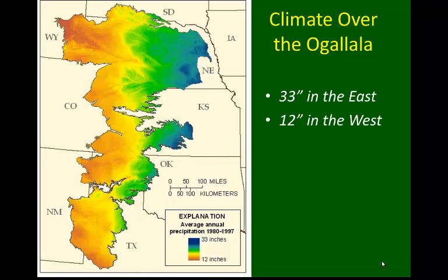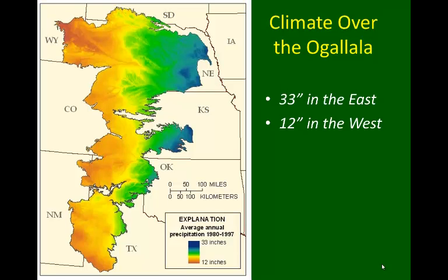Prior to the development of pumping of groundwater from the Ogallala Aquifer, it was estimated to contain enough water to cover the entire continental United States with roughly 20 inches of water. If it were ever to be pumped dry, the expectation is that it would take about 6,000 years to refill.